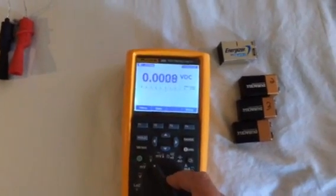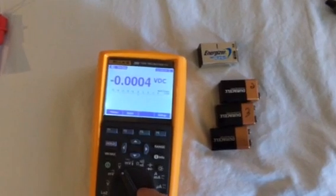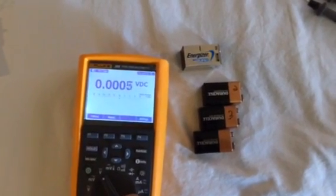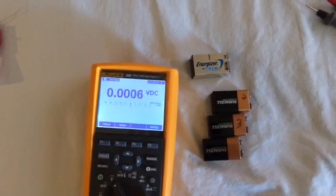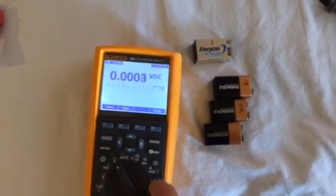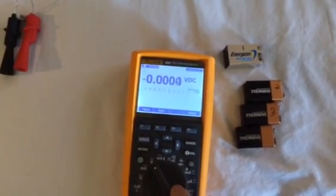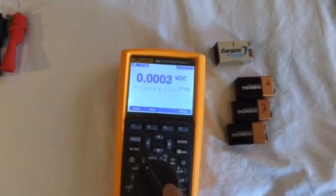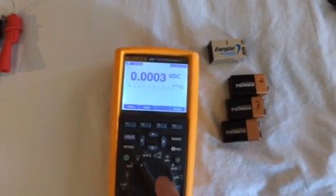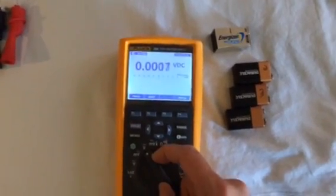And the reason why is because there's something called a surface charge on these batteries, in which they will falsely indicate a higher voltage than you'll actually get if you put these batteries into a device. And in order to simulate an actual practical test of these batteries, we're going to have to decrease the impedance.